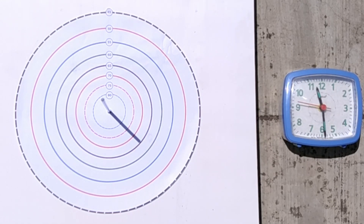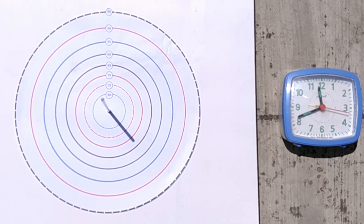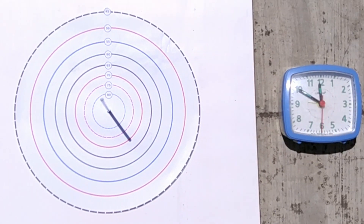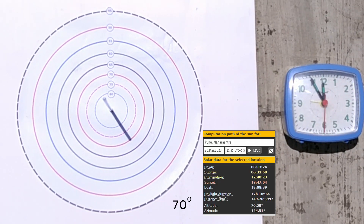The instance of the sun's daily maximum altitude is also called solar noon, which does not typically coincide with clock noon. It is also known as culmination.